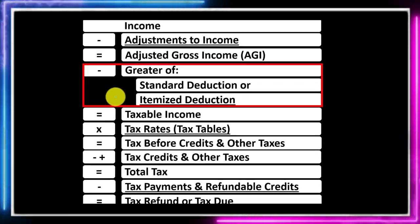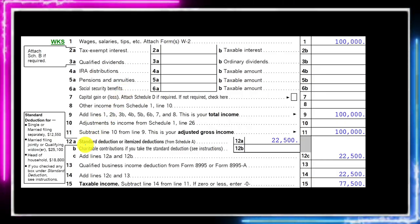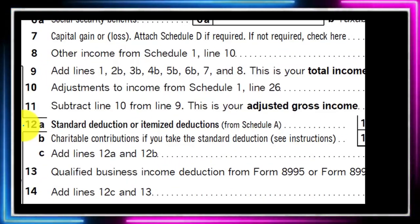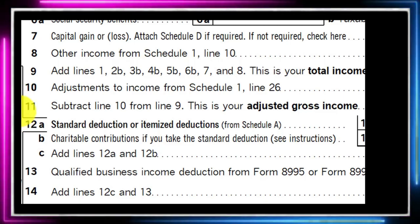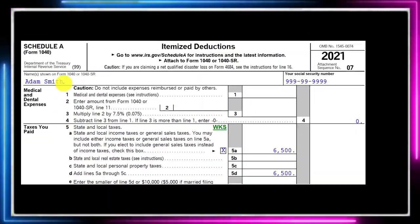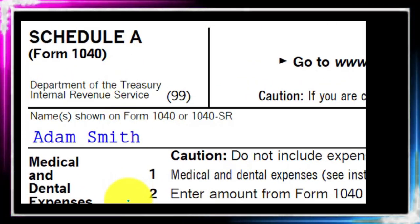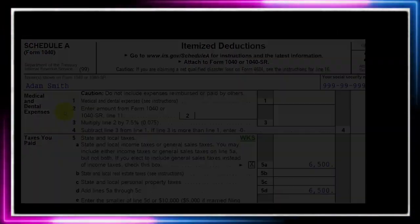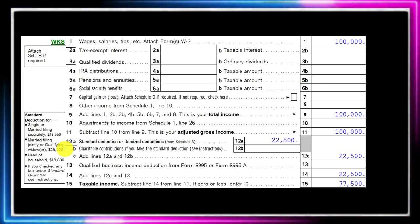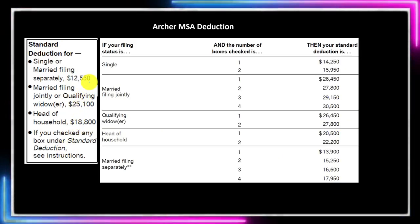Noting that itemized deductions will only be taken if they add up to something greater than the standard deduction. Looking at page one of Form 1040, we're focused on line 12a — standard deduction or itemized deductions. The standard deduction amounts are on the left-hand side. If we're going to itemize, we'll have a Schedule A listing the major categories, totaling up and being pulled back into Form 1040 line 12a if greater than the standard deduction.